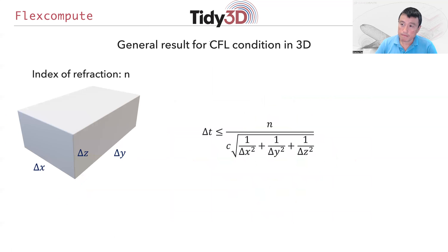This derivation can be straightforwardly generalized for a three-dimensional system. You will obtain this CFL condition relating the time step to the discretization along the x, y, and z directions, as well as the refractive index of the material, which controls the physical speed of light in the system.